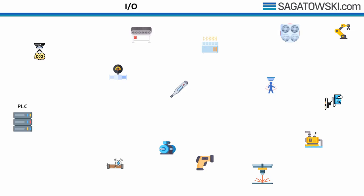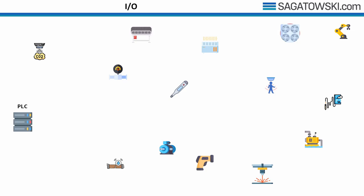Our PLC needs a way to interact with all these different objects. For this it requires something called a fieldbus, which is an interface that connects the PLC to all these sensors and actuators. A fieldbus is a name for an industrial computer network used for real-time distributed control.